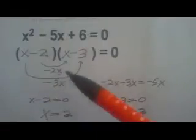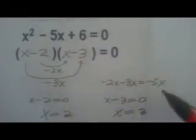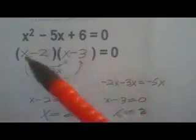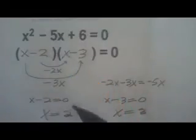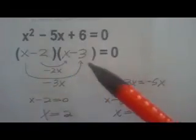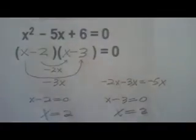And we add those together, we get minus 5x. Then we take x minus 2 equals 0, x minus 3 equals 0. Our solution is x equals 2 and 3.